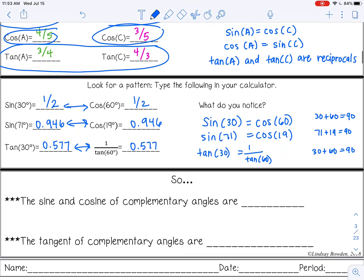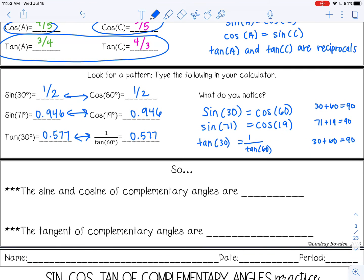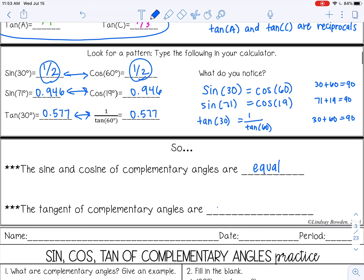Okay, so let's talk about what that actually means. So the sine and cosine of complementary angles will always be equal. So the sine of 30 and the cosine of 60, those are complementary angles. They both give us 0.5 or 1 half. They are equal in value. And then the tangent of complementary angles are reciprocals, which means a flipped fraction.